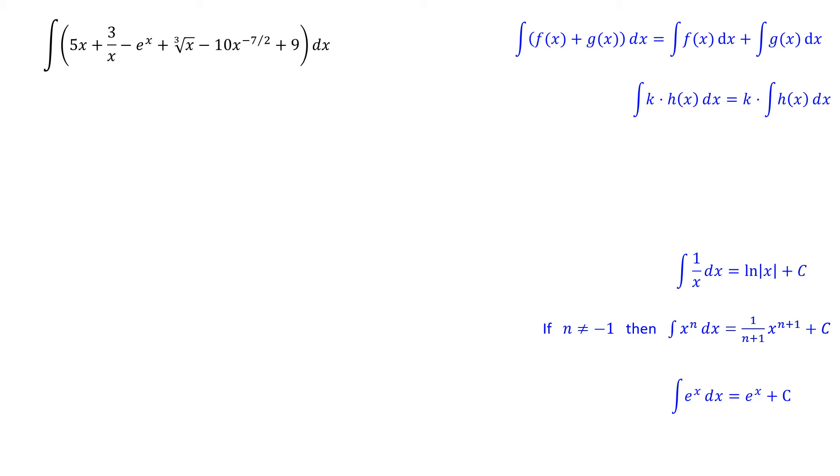The first thing that I can do is notice that this function is really the sum of six different functions, so I can distribute the integral and use the scalar multiplication rule, the one with the k in it, to factor out all the constant multipliers of those functions. Now what I've done is broken this integral up into six integrals which I can then apply the rules on the right side of the page to each one.